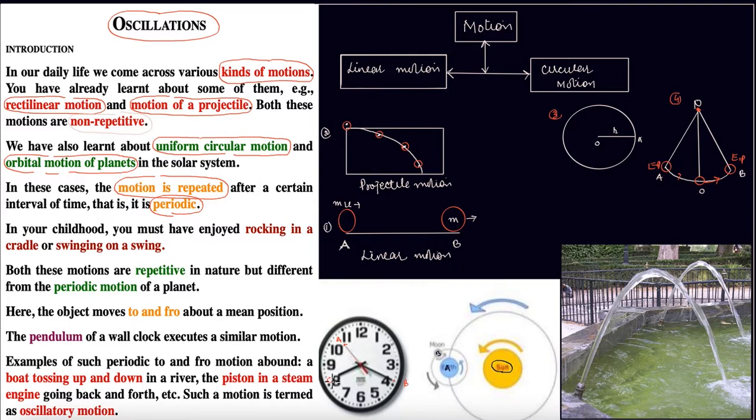The hour hand at location C will return after 12 hours. So these are all periodic motions, but each has a different period. The second hand returns to point A after 60 seconds, the minute hand returns to point B after 60 minutes, and the hour hand returns to point C after 12 hours. All are periodic motions with different periods.